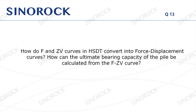Question 13: How do F and ZV curves in HSDT convert into force-displacement curves, and how can the ultimate bearing capacity of the pile be calculated from the F-ZV curve? For the case method, we can get the results by applying F(T1), F(T2), ZV(T1), ZV(T2), and the corresponding JC value acquired from the F-ZV curves. For the CAPWAP method, the model is complex — you can look for related papers if you are interested. At present, the corresponding software is mature, and as long as the original test data and corresponding test parameters are input, the results can be given.